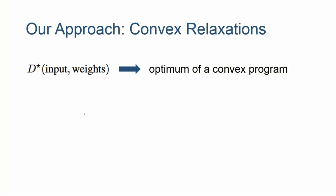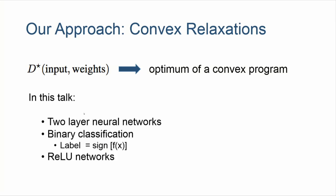In this talk I focus on two-layer neural networks, and for ease of presentation, binary classification where the label is the sign of some function f of the network. What I present can be easily extended to multi-class settings and more general networks; for bigger networks or more general activations, we have a slightly different approach I'm happy to discuss offline.